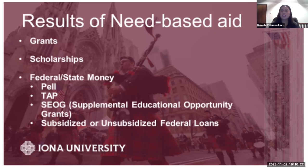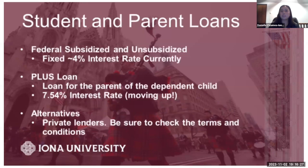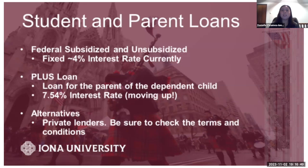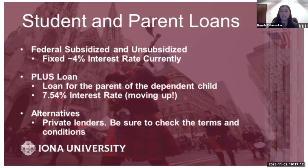For federal loans, there's a big difference between subsidized and unsubsidized. Subsidized loans do not accrue interest, whereas unsubsidized loans accrue interest throughout your college career at a fixed 4% rate. The PLUS loan, also called the parent loan, is solely for the parent of the dependent child. It involves a credit check, and the current rate is 7.54%, moving upward. Parents can request deferment, but the loan must eventually be repaid. Private lenders are also an alternative — be sure to check their terms and conditions.